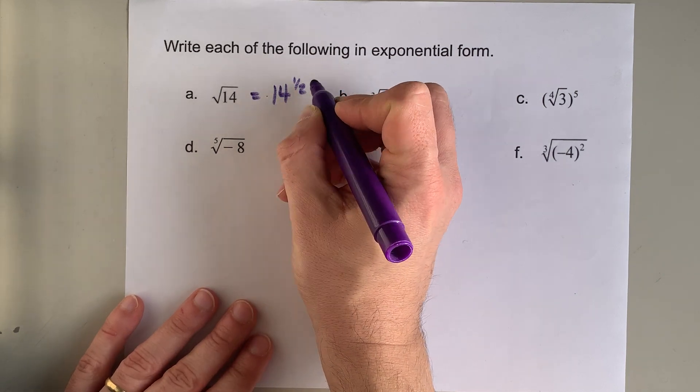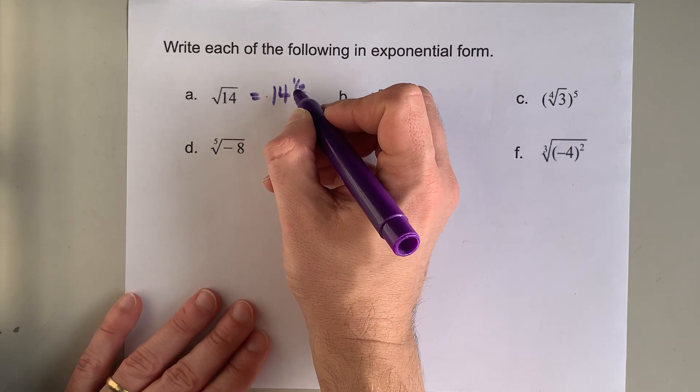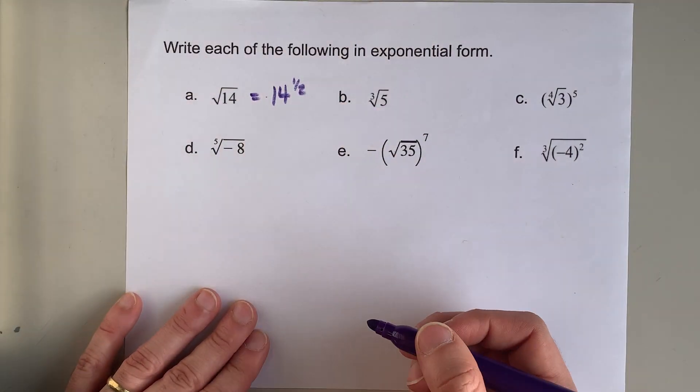This is called the exponential form because you're showing the square rooting as a power of a fraction, in this case one half for square root.